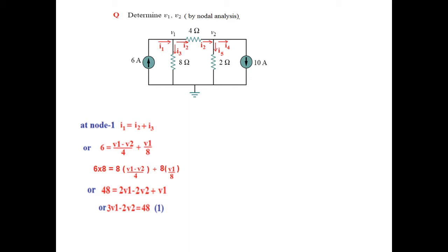Now at node number 2, I2 is entering and I4 and I5 are leaving. The KCL equation is: I2 plus I4 equals I5. Converting to voltage: I2 is coming from V1 to V2 so (V1 minus V2) divided by 4. I4 is 10 amperes. I5 is going from V2 to 0, so V2 divided by 2.